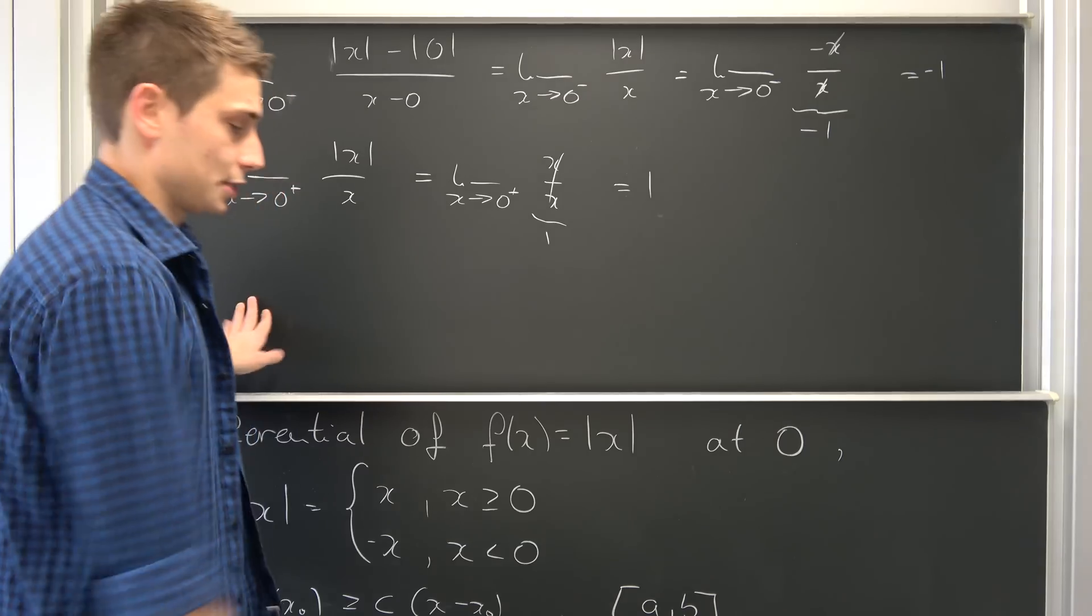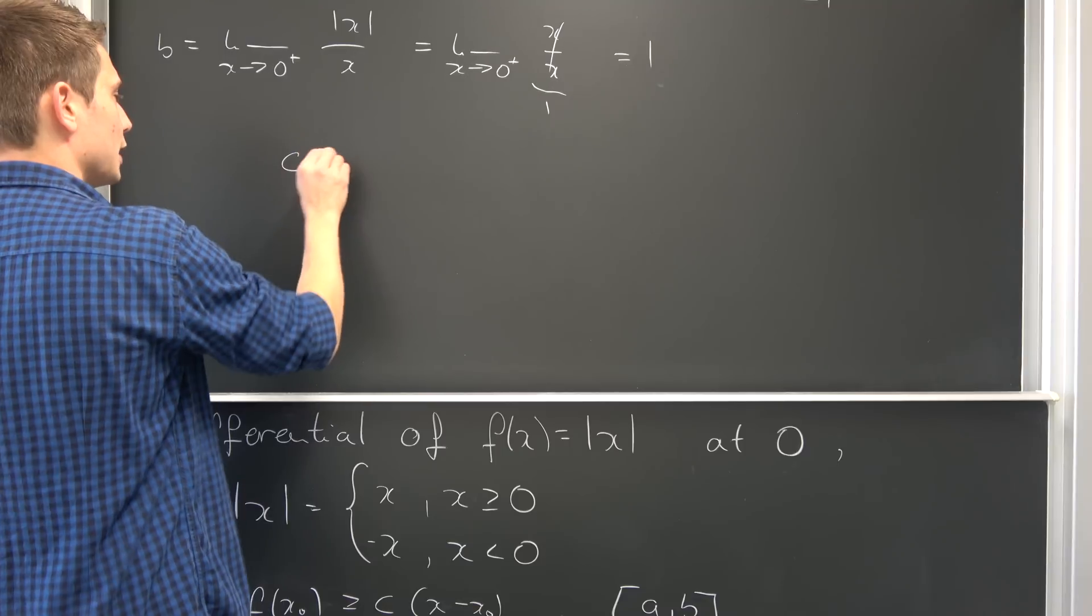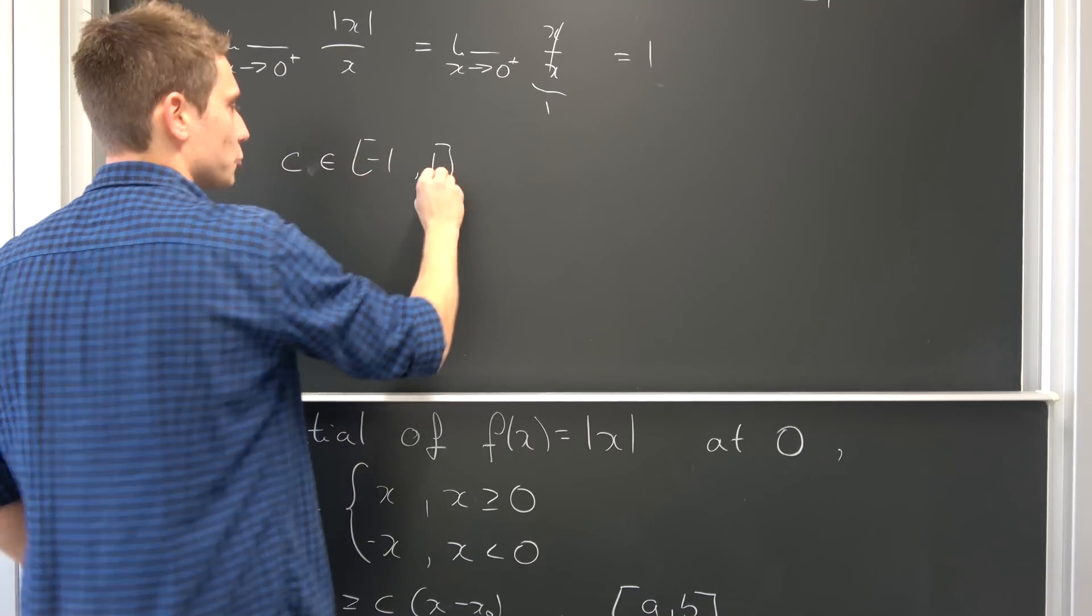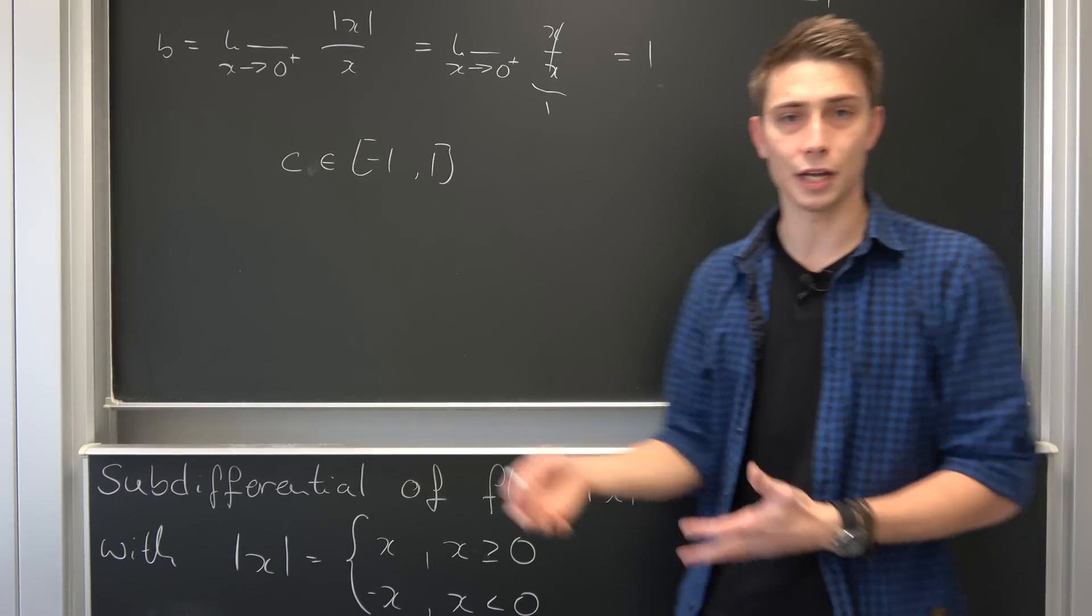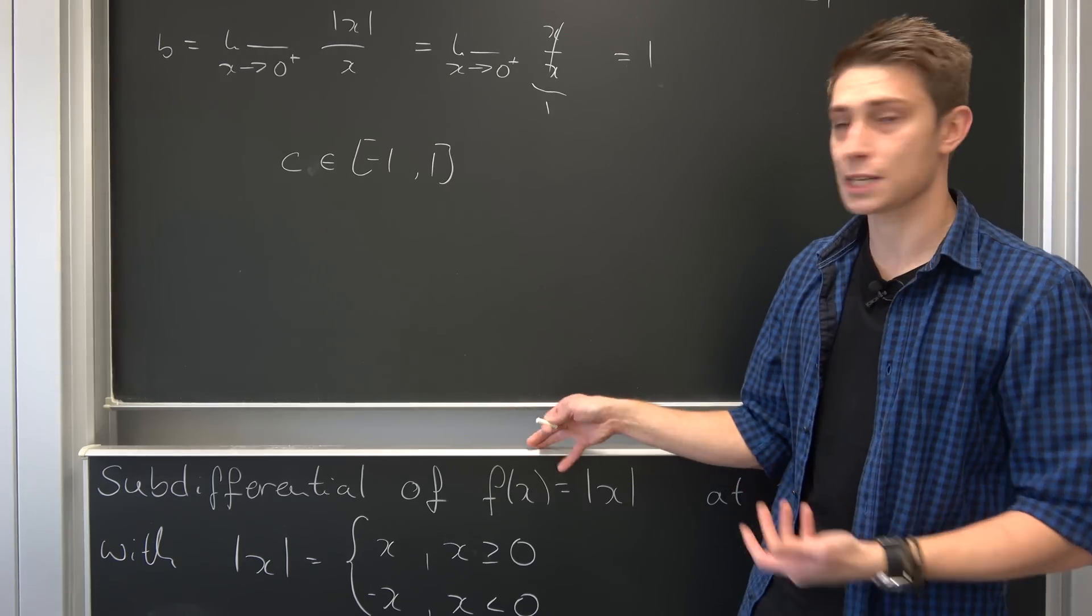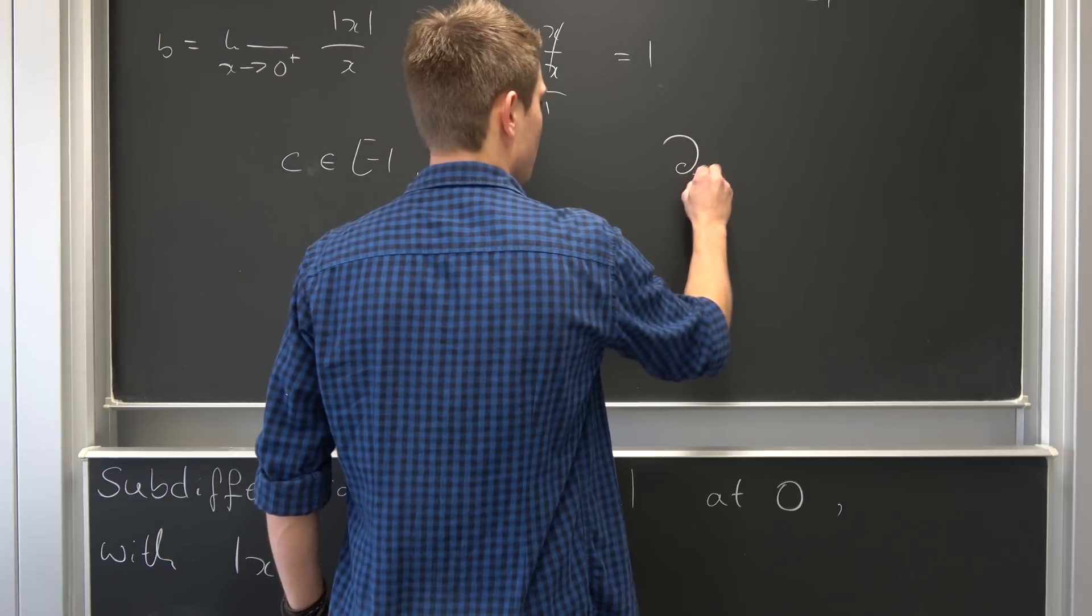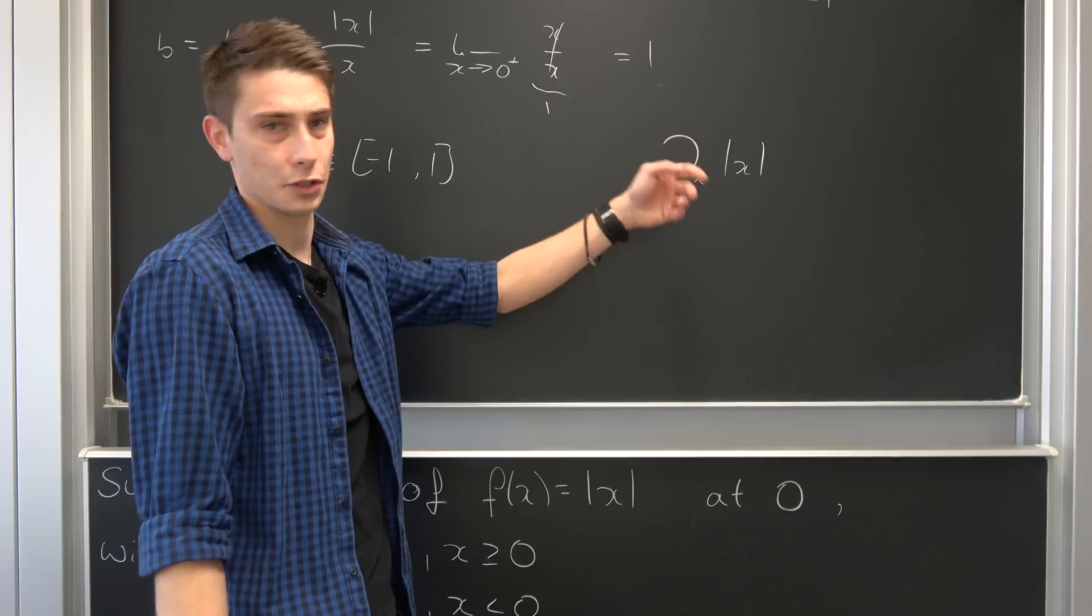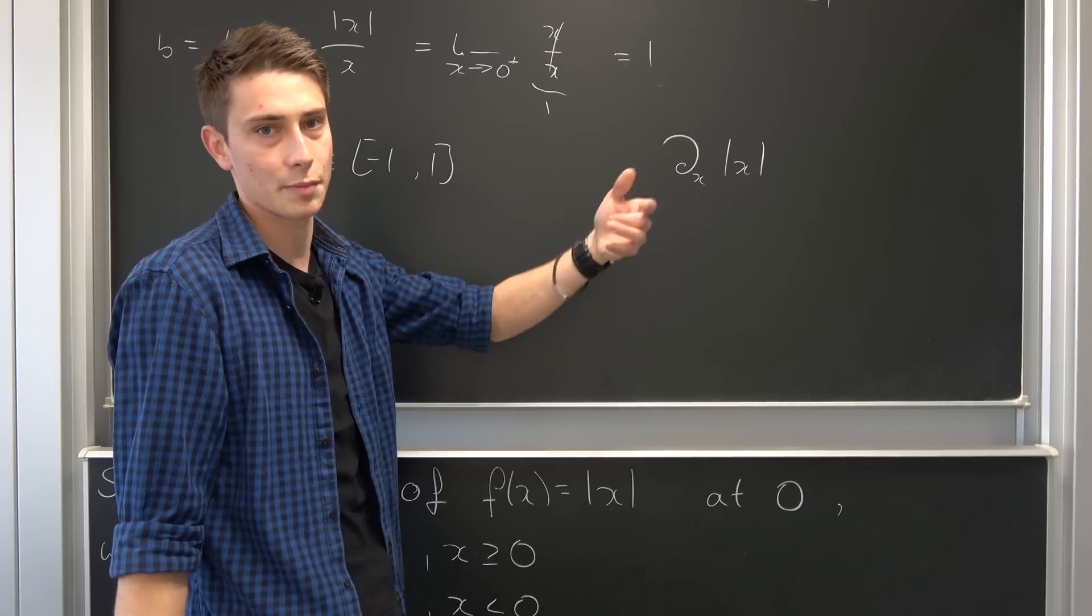And there we go. We've found the sub-differential. So c can take all the elements: c is an element of [-1, 1]. This is how you can basically define all the derivatives without any usage of the delta distribution on our absolute value of x.